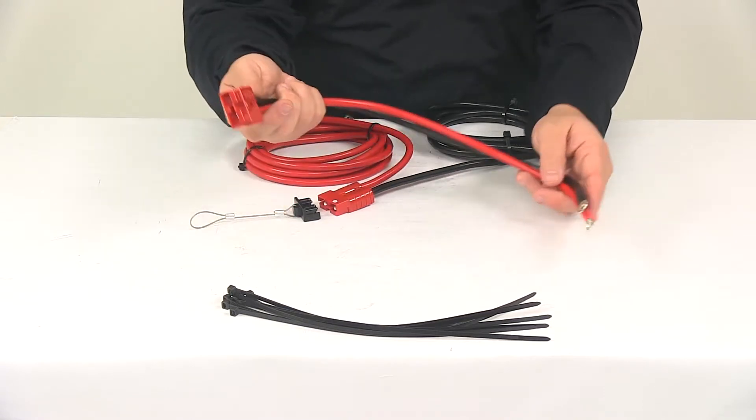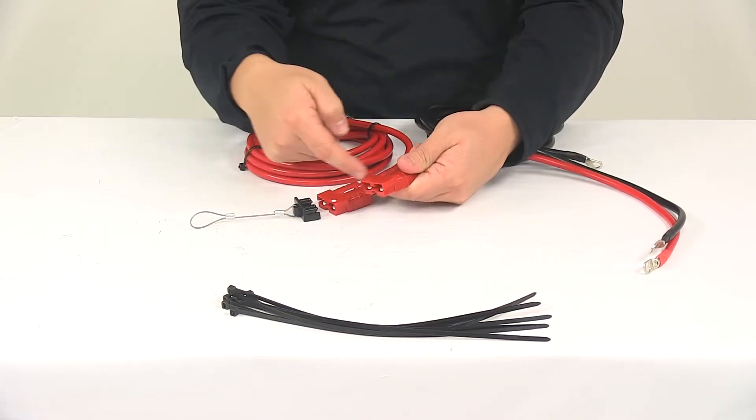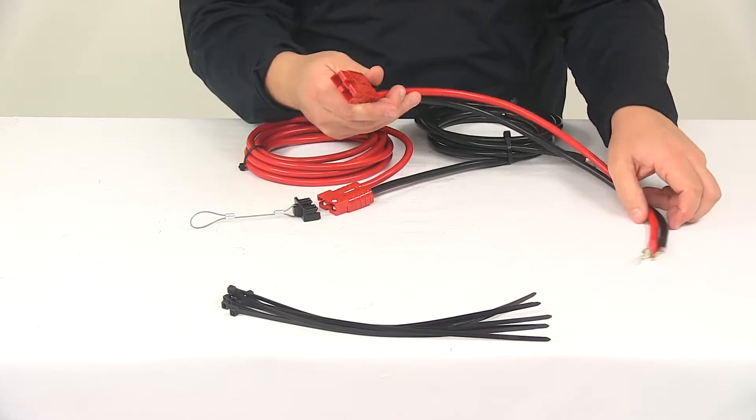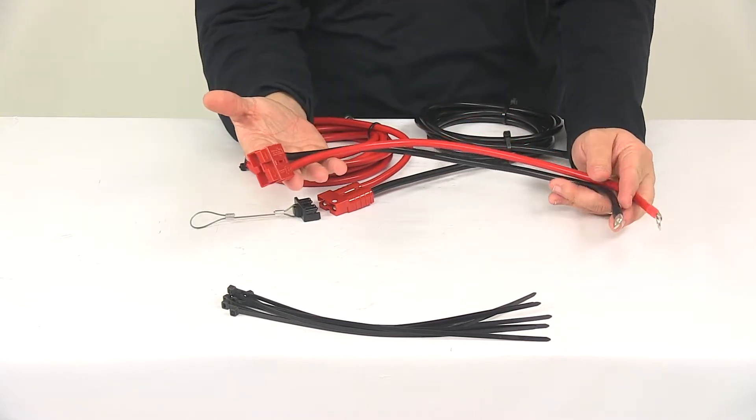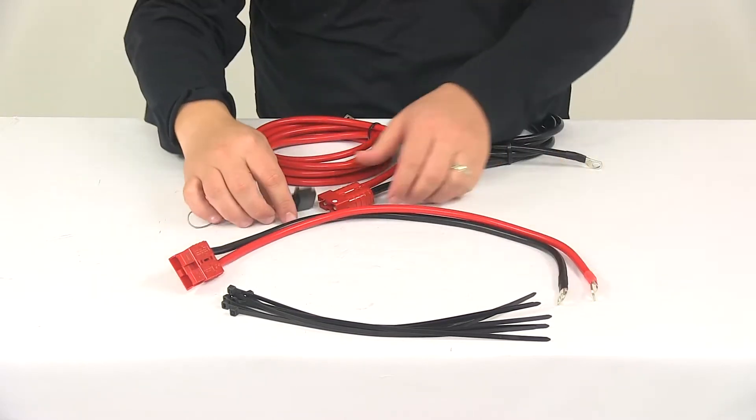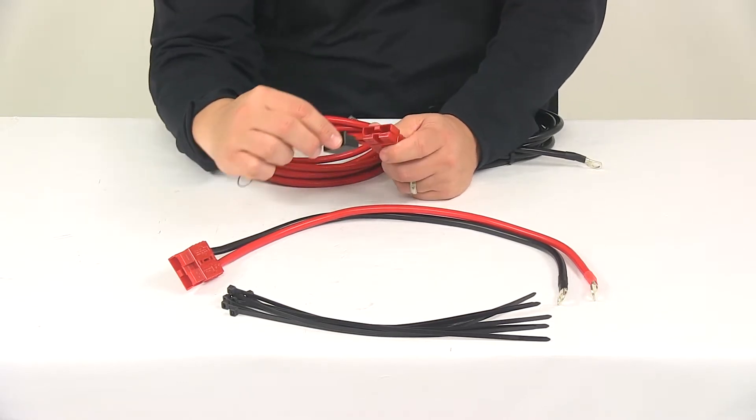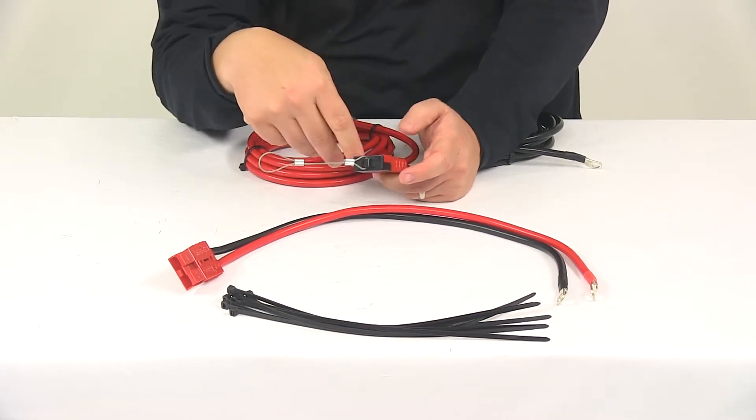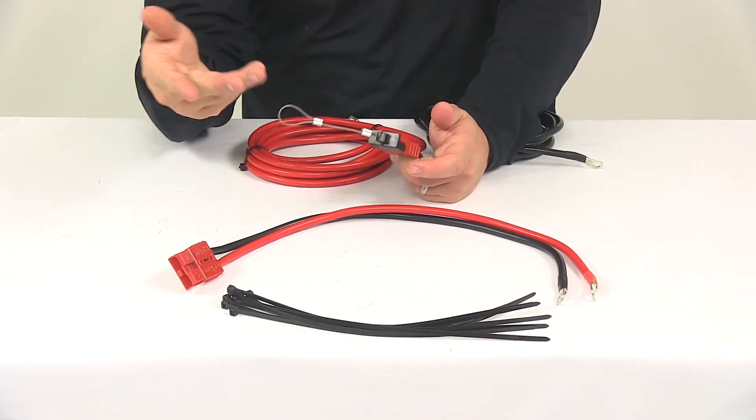When you're ready to winch, you simply connect the two plugs together and you're ready to go. When you're done, simply disconnect the plugs and place the cap over the vehicle end plug. It's going to keep out dirt and grime and that's all there is to it.